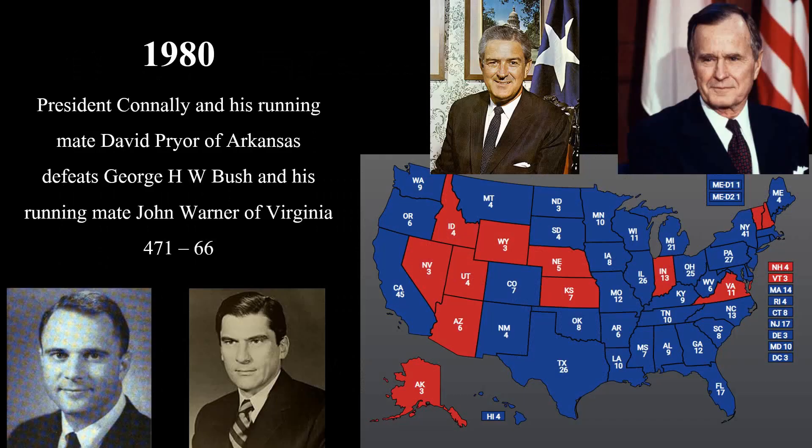Kennedy is still in a coma by the election of 1980, when Connolly runs with his new running mate, David Pryor, a Senator from Arkansas. In a landslide, he defeats former CIA Director George Bush and his running mate, Senator John Warner of Virginia.